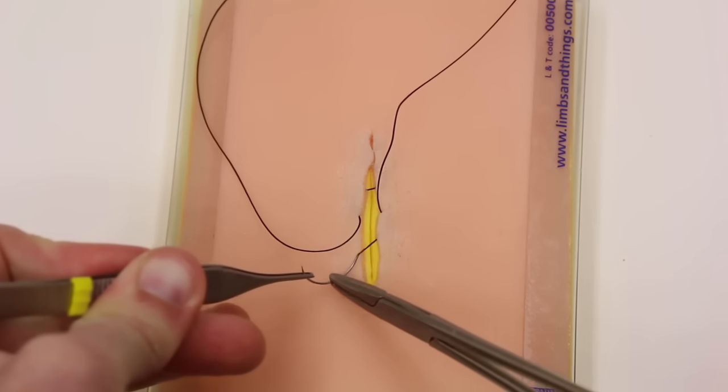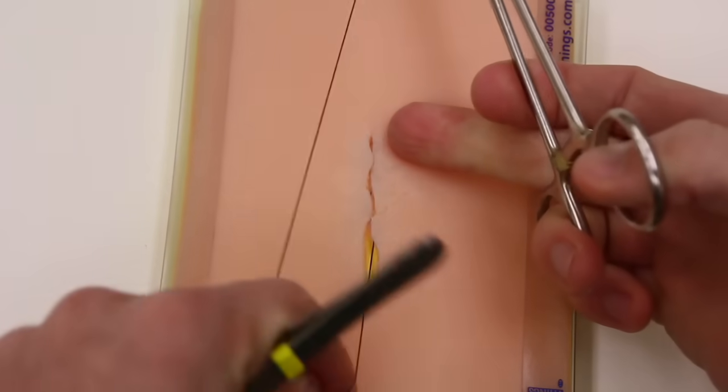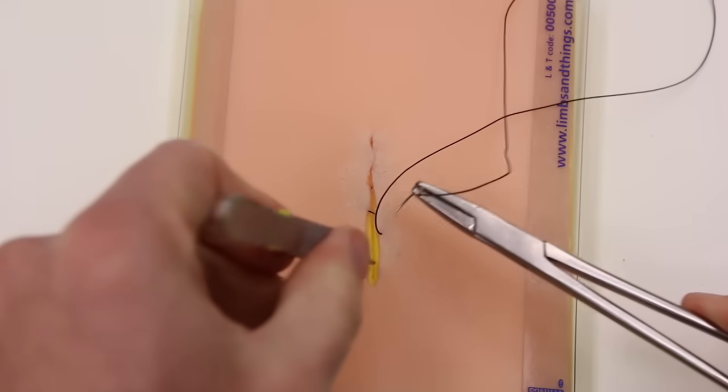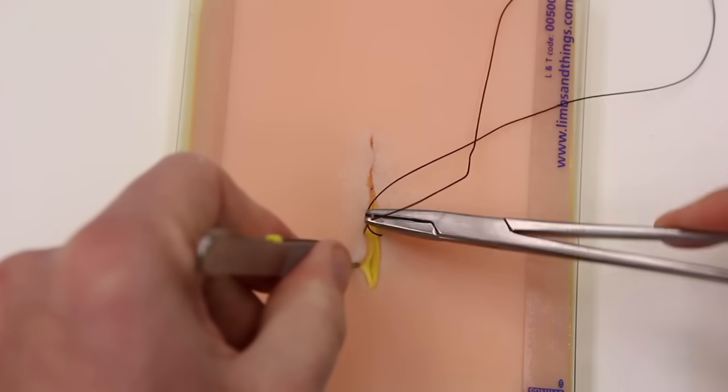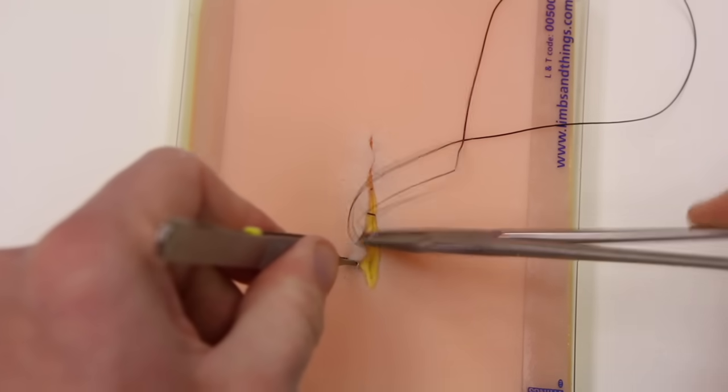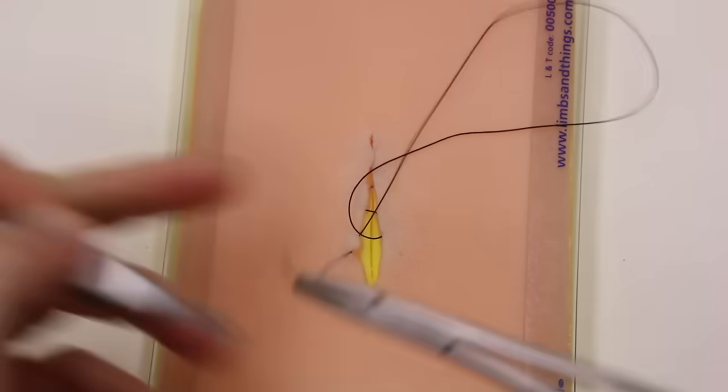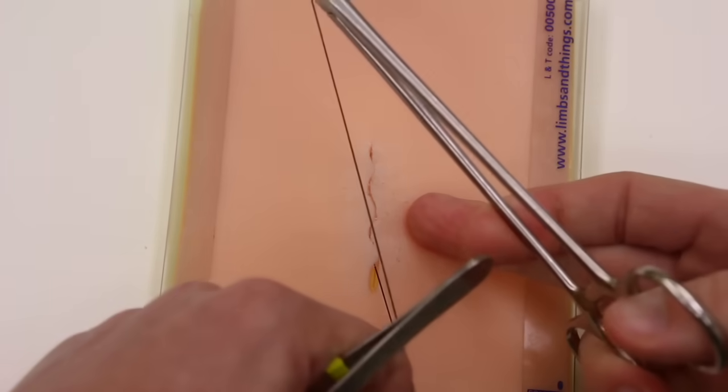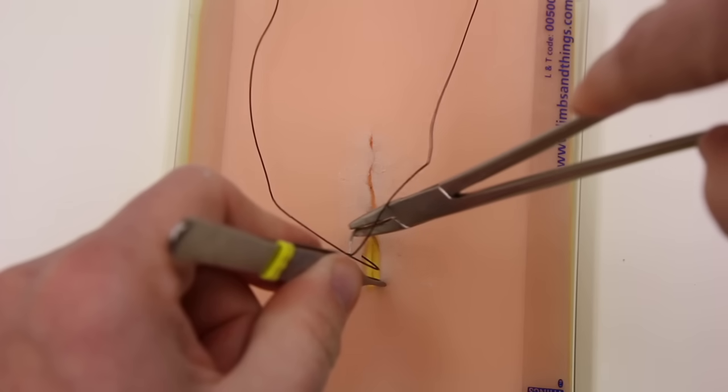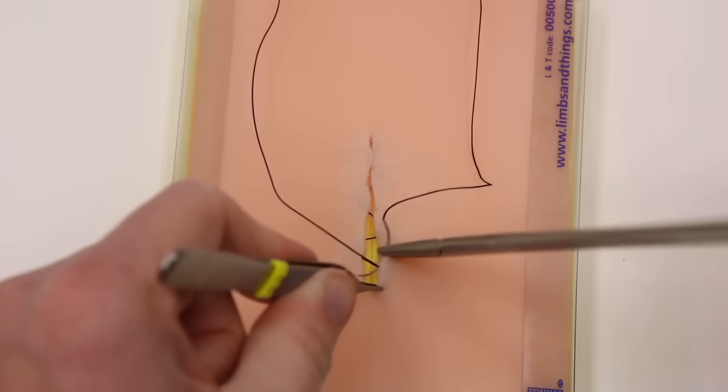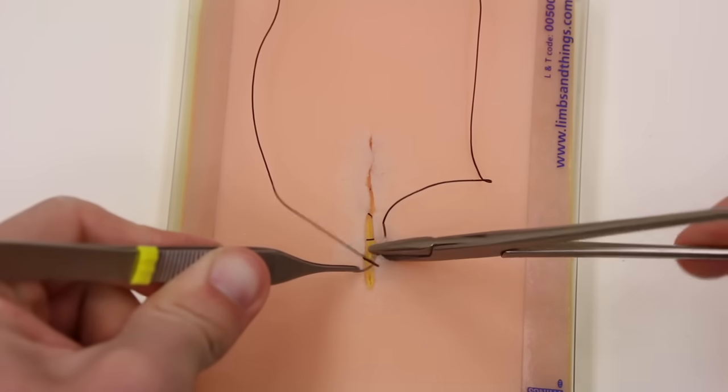In longer incisions, when you're using monocryl, you can sometimes take two or three bites and then pull tight. But it is best practice, particularly if you're using brands that are not monocryl that will break if you put too much effort on it. So pulling taut after each pass is essential in that condition.